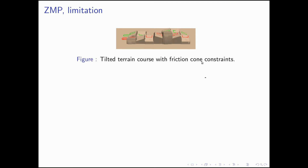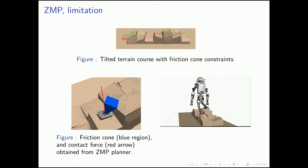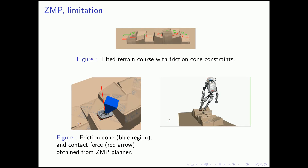Here, we plan the robot motion on a tilted terrain with friction cone constraints using the ZMP planner. On the bottom left, we show the friction cone together with the contact force from the ZMP planner. As you can see, the ground contact force lies outside of the friction cone. When we simulate this motion, the robot foot slides and the robot falls over.